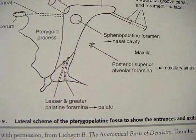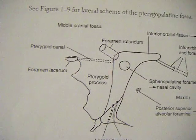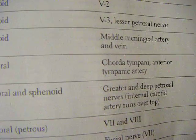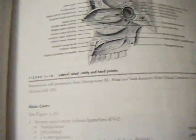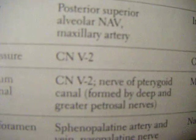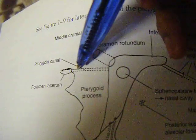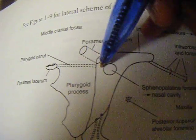This is the lateral scheme of the pterygopalatine fossa to show the entrances and exits. This is the foramen lacerum. The contents passing through the foramen lacerum are the greater and deep petrosal nerves, which form the nerve of the pterygoid canal. So the foramen lacerum is where the nerves pass through, forming the nerve of pterygoid canal.